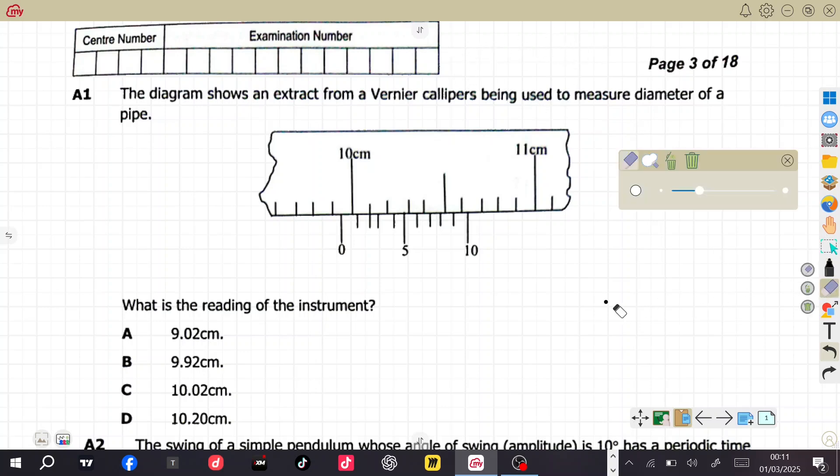Alright, so the question here says, what is the reading of the instrument? So since we are dealing with the Vernier caliper, you must understand that the reading of the Vernier caliper has a formula which is reading is equal to main scale plus open brackets, we have the Vernier scale, then times the least count there. This is the formula, guys, which you don't need to forget. So for us to be able to apply this formula, we need to have what we call data.